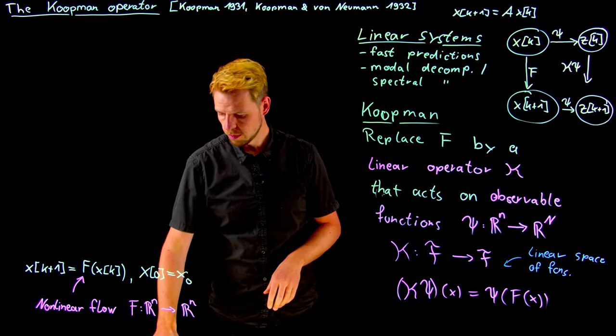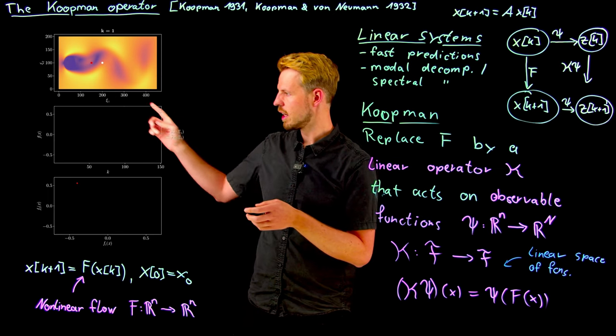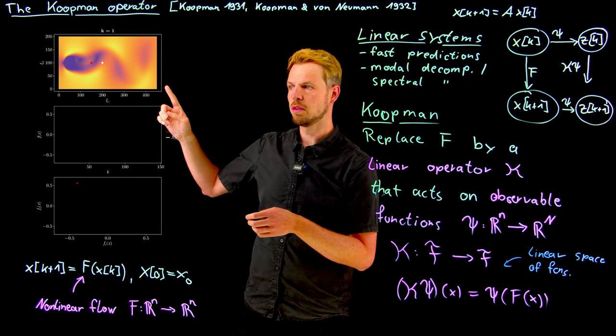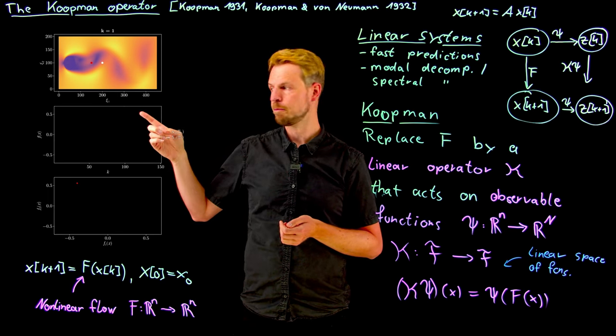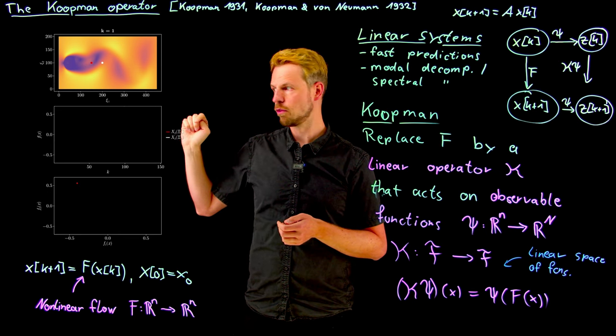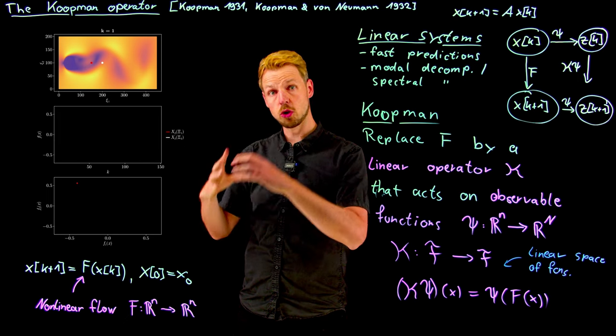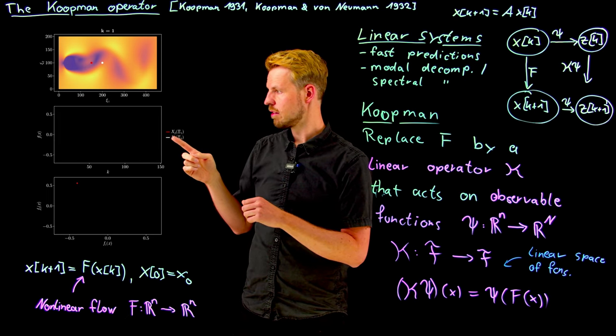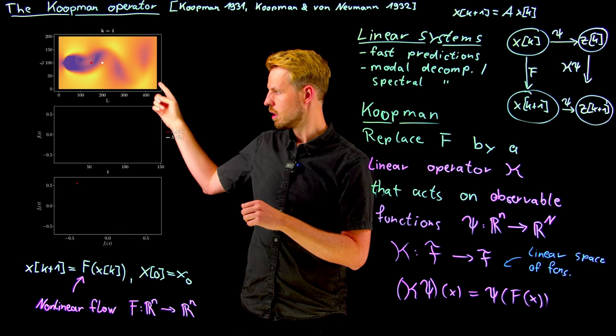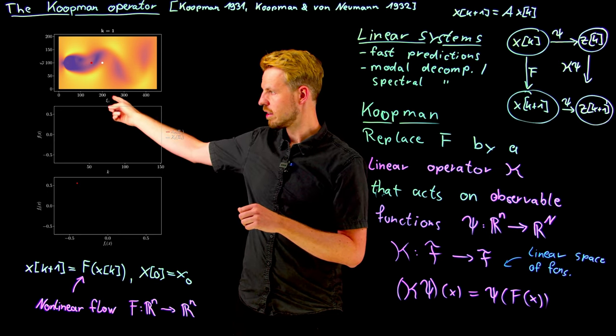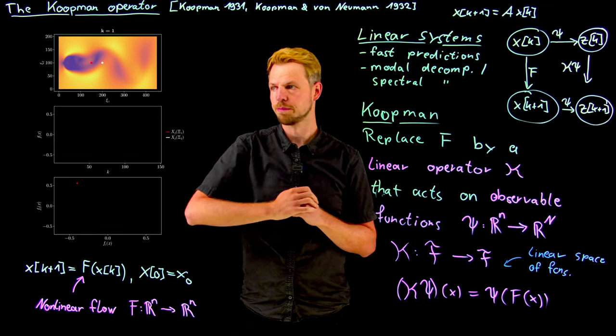So before we conclude, maybe one small example that I want to use to visualize this. If you look at this snapshot of a fluid flow example, we have the Navier-Stokes equations and nonlinear PDE on a rather high dimensional state space in discretized form here. And it's going to evolve forward in time.